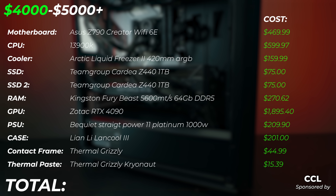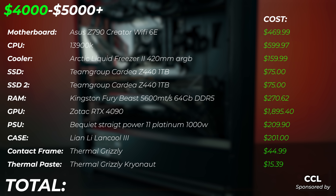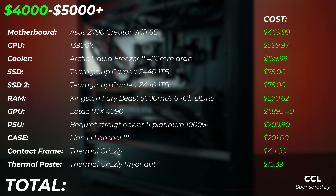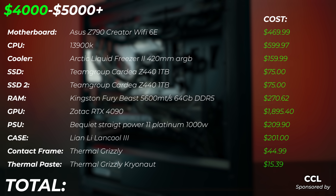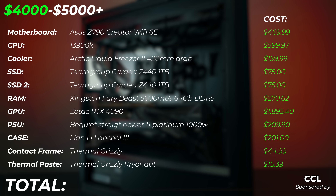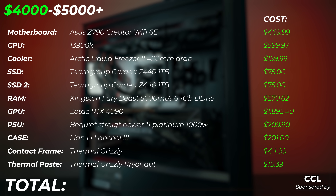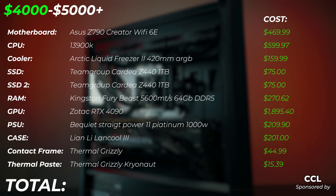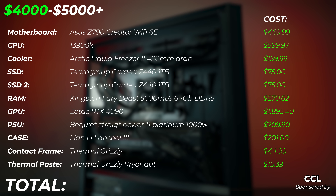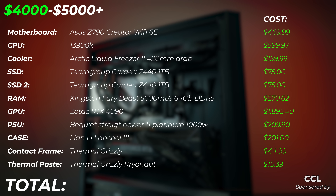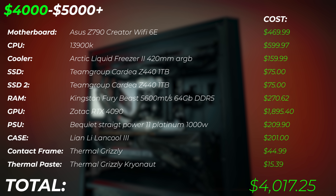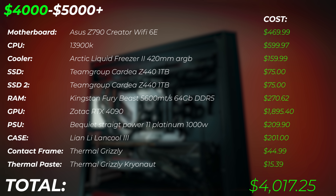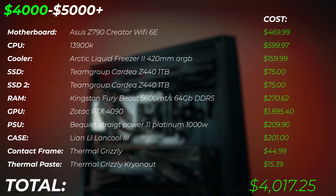An extra we're doing at this price point: we're using the Thermal Grizzly Contact Frame to get better contact on the CPU and improve performance at 100% utilization. We're also using Thermal Grizzly Hydronaut thermal paste — one of the best thermal pastes on the market — to get every last degree Celsius lower on the CPU. The total for this build is $4,017.25 at the time of making this video. Check out the latest pricing in the description below.